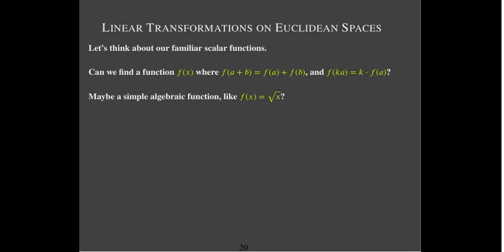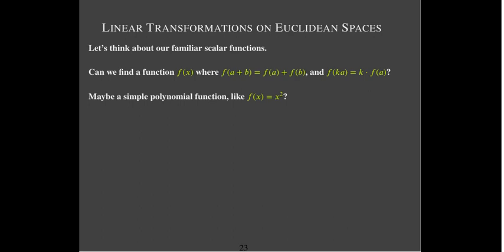Logs and trig functions may be too complicated — they're called transcendental functions. Let's try an algebraic function like radical x. Is radical(a+b) equal to radical(a)+radical(b)? No, that's not true, and there's no identity for the radical of the sum of two numbers. Maybe radicals are too complicated. What if we just look at a monomial — a power of x? F of x equals x squared.